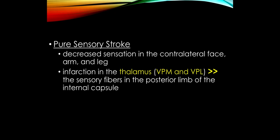Pure sensory stroke is an occlusion of the thalamogeniculate arterial branches that come off the posterior cerebral artery — a posterior circulation stroke. The stroke is most often in the thalamus. Patients present suddenly complaining of numbness and tingling on one side of the body: face, arm, and leg. The thalamic nuclei involved are VPM for the face and VPL for the arm and leg. On examination they will have loss of sensation to all modalities — pain, temperature, vibration, and proprioception — on the opposite side of the body.